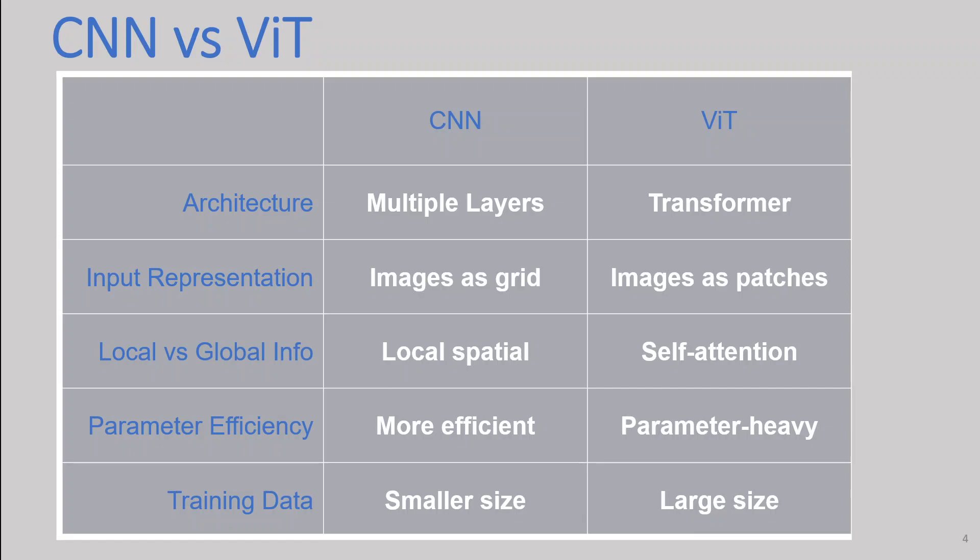Then we have local versus global information. CNNs naturally exploit local spatial relationships by using convolutional filters with shared weights. This allows these models to capture local features and spatial hierarchies. Whereas in ViT, the model processes images in a global manner by applying self-attention across all tokens and patches, enabling it to capture long-range dependencies and global context.